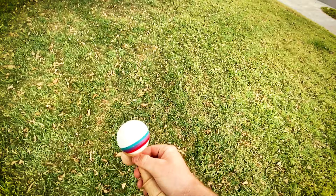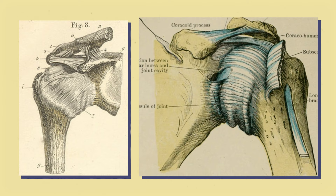So to increase the depth of the socket, our bodies deepen it with a structure called the labrum, which blends in with dense irregular connective tissue to form the shoulder capsule, plus another layer of more dynamic support from the muscles and tendons of the rotator cuff.